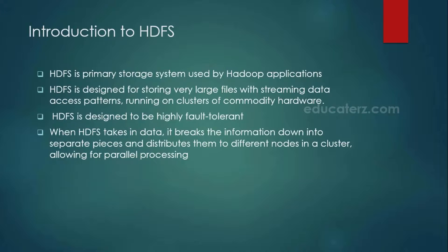HDFS is a primary storage system. We call it as a Hadoop distributed file system. In the entire Hadoop cluster, this is the place where you will be storing all your big data files. Whether it is a small file or big file, irrespective of the size, all your files get stored as part of your Hadoop distributed file system. Whatever is stored as part of your HDFS gets divided into small chunks called blocks, and each block is going to be stored as part of your HDFS.